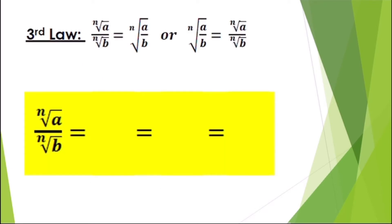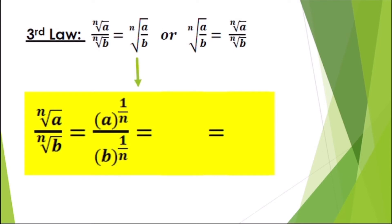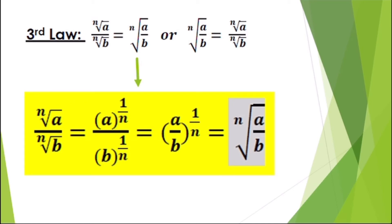The third law states: n-th root of a over n-th root of b equals the n-th root of a over b. For the derivation, starting from a raised to one over n divided by b raised to one over n, we simplify to get a over b raised to one over n, which in radical form is the n-th root of a over b.